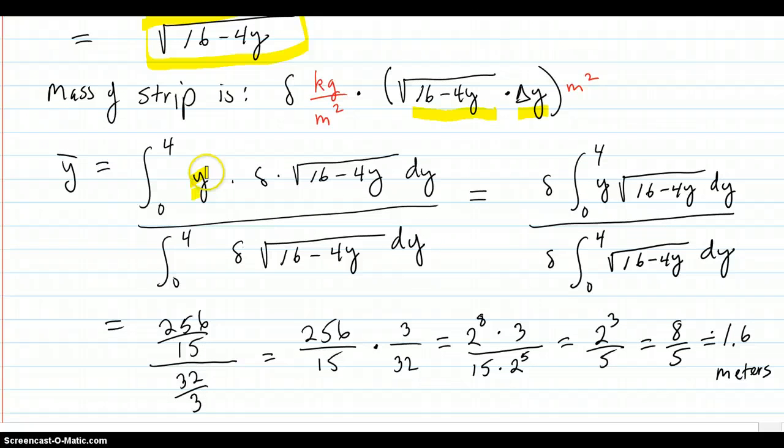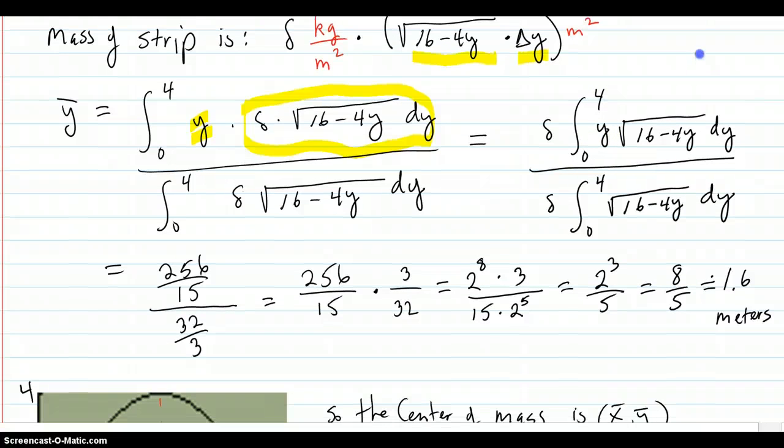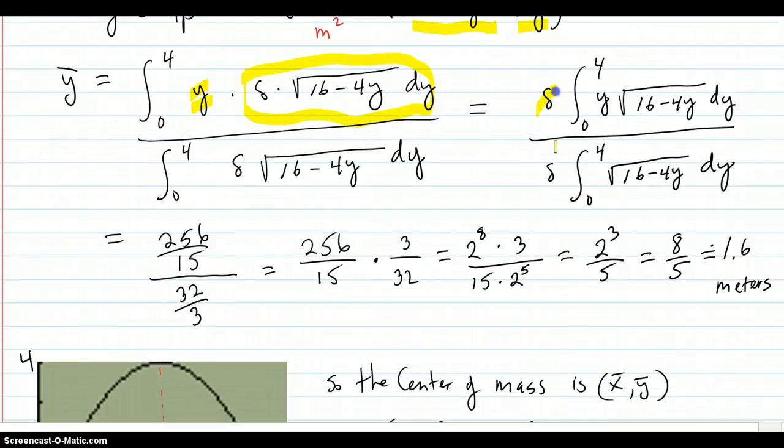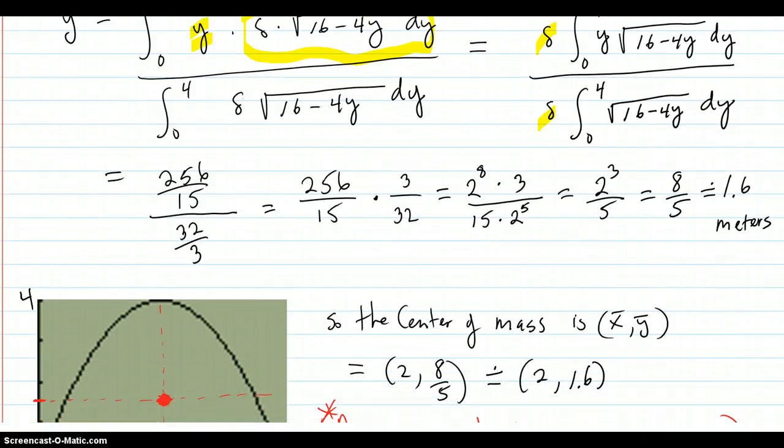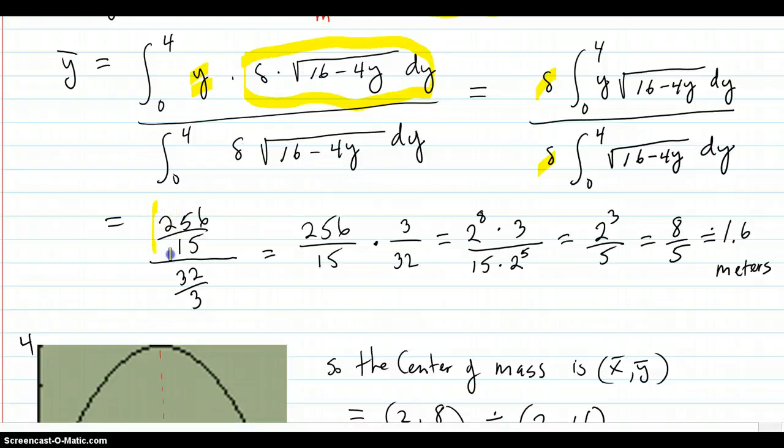Put that into the center of mass formula. Here is your location, a y location. Here is your mass. Location times mass over sum of masses. It happens to go from 0 to 4 on the graph that you see above. It's not always the same as the x. The delta constant factors out, cancels out. You work these integrals and you get 256 over 15 divided by 32 thirds, which works all out to 8 fifths, which is 1.6 meters.